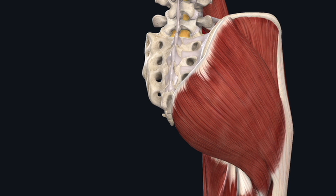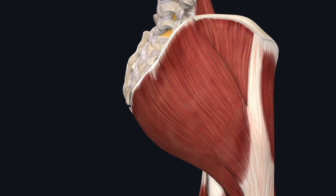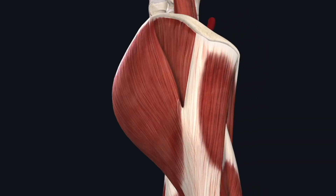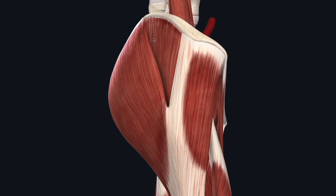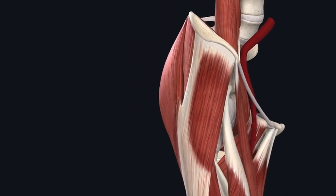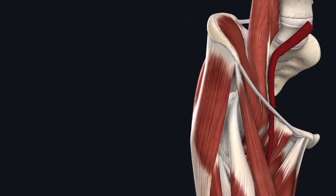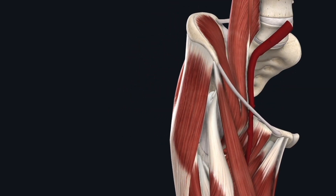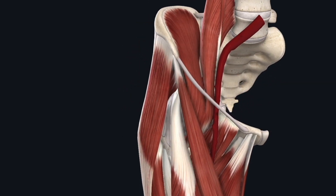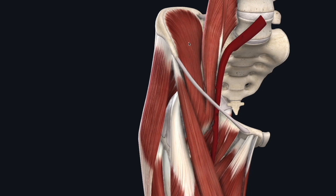Posteriorly, we have the gluteus maximus, gluteus medius, and then as we come anterior, the tensor fascia. We'll highlight each of these muscles now.